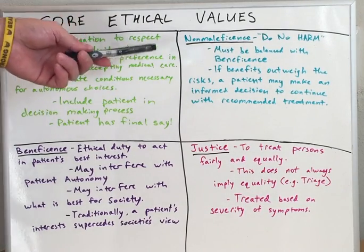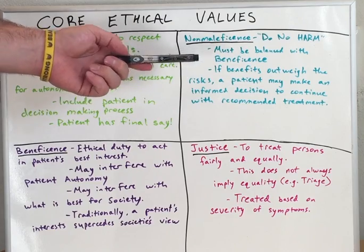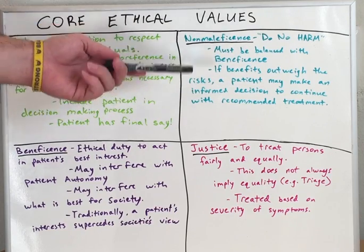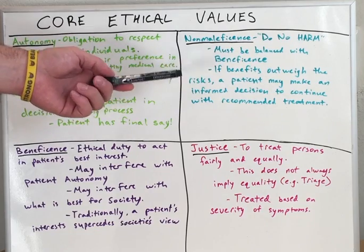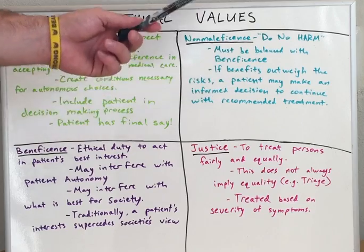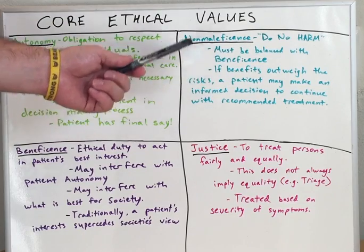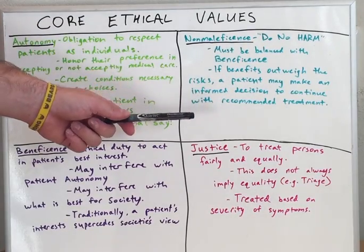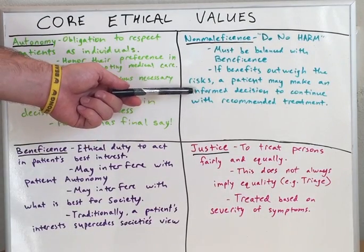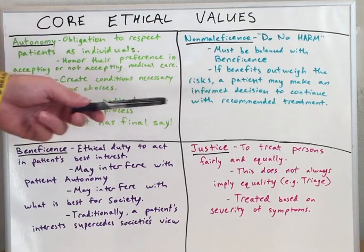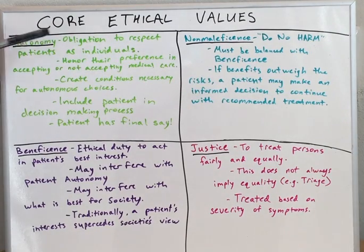When we advise a patient on a particular treatment, surgery, or medication, we need to allow them to be aware of all the benefits, all the risks, all the adverse drug effects, and all of the possible side effects. After they have been informed, they are able to make an informed decision and use their patient autonomy to make the final decision.